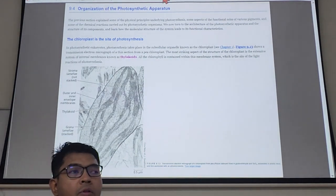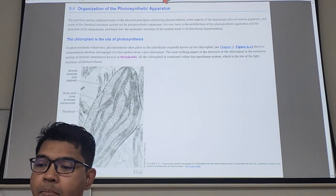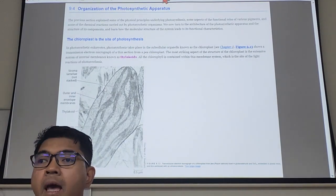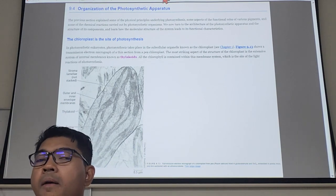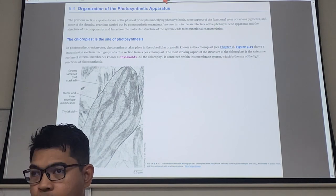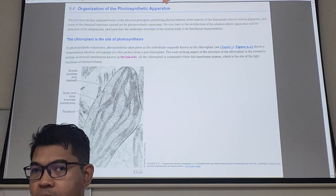You need to understand photosynthesis is not happening just about anywhere. It is happening in a specific location inside a cell, and inside the cells there are many organelles, meaning membrane-bound structures, subcellular compartments of a cell.